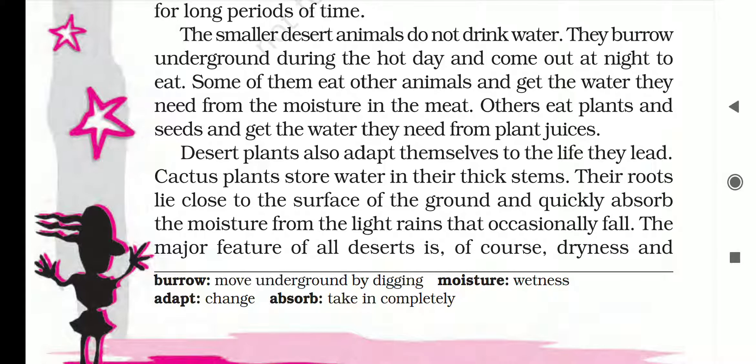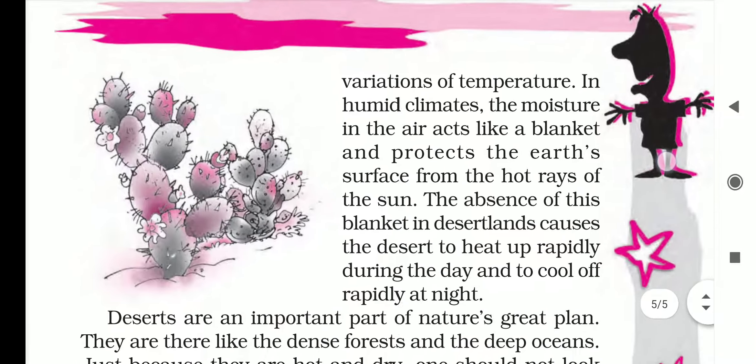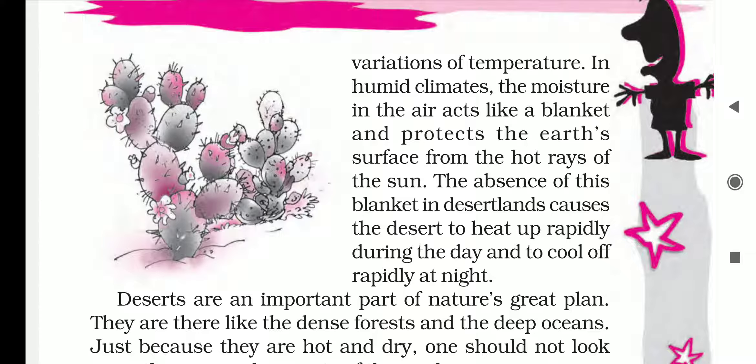Desert plants also adapt themselves to the life they lead. Cactus plants can store water in their thick stems. Their roots lie close to the surface of the ground and quickly absorb the moisture from the light rains that occasionally fall. Cactus plants absorb water in their thick stems, and their roots are spread near the surface of the ground so they are able to absorb moisture even from the rare light rains.